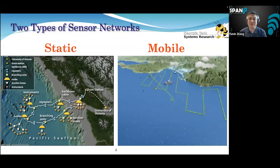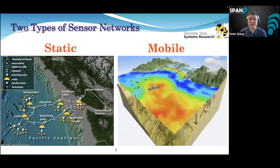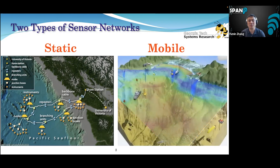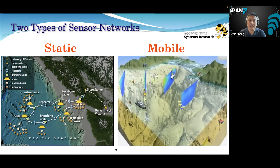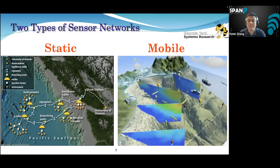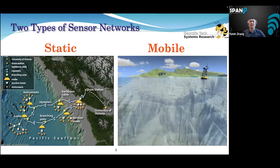Of all the projects I have worked on, there are two types of sensor networks we can deploy in the ocean to collect data. On the left hand side you see the static sensor network — this is the famous Neptune project where you install high power nodes in the ocean with sensors at the sea bottom. On the right hand side, you can see robots that can move around and collect data.